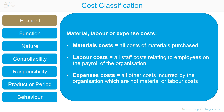By element, which is material, labour or expense costs. Material costs are all costs of materials purchased. Labour costs are all staff costs relating to employees on the payroll of an organisation. Expense costs are all other costs incurred by the organisation which are not material or labour costs.